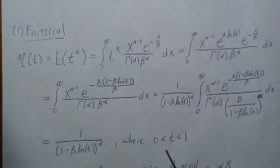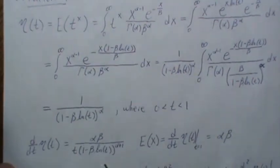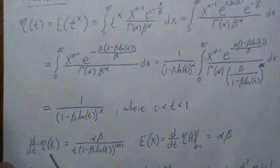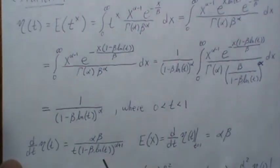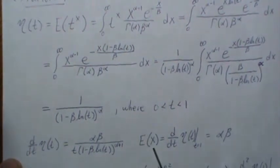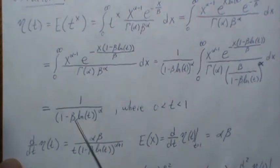Now these integrals only converge when t is between zero and one. So how do you use a factorial moment generating function? You take the first derivative of this and you get this. And then to find the expected first factorial moment is the derivative of that evaluated at t equals 1, which is beta zero. So log of one is zero, so this drops out.